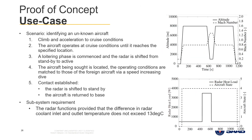In order to test this simulator, we formulated a simple scenario where the goal is to identify an unknown aircraft at some approximately known geographical location. The scenario starts with the climb and acceleration to some cruise conditions. The aircraft then operates at cruise conditions until it reaches the specified location. The radar is then shifted from standby to active. Once the sought aircraft is located, the operating conditions are matched to those of the foreign aircraft, and once contact has been established, the aircraft is returned to base. There is a subsystem requirement that the difference between the inlet and outlet temperature of the coolant must not exceed 13 degrees Celsius for the radar to function.